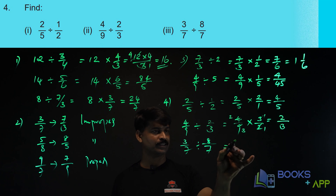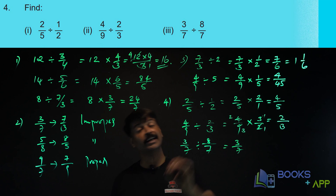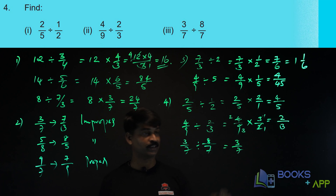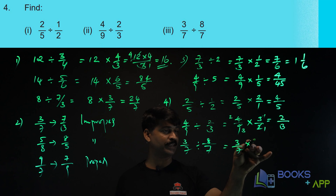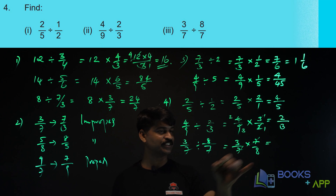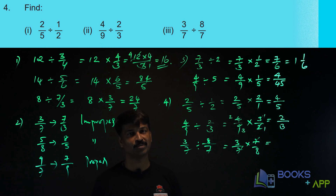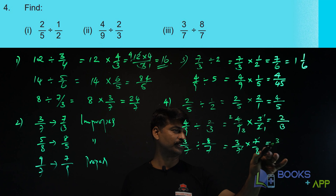Now let us solve the third one: 3 by 7 divided by 8 by 7. It becomes 3 by 7 into 7 by 8. The 7s get cancelled, so what is remaining is 3 by 8.